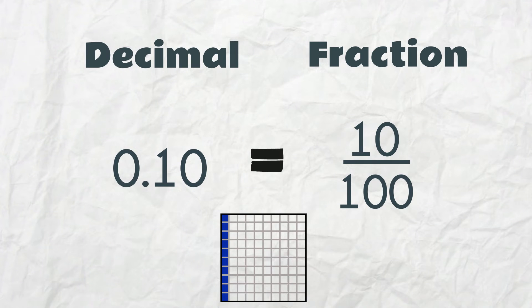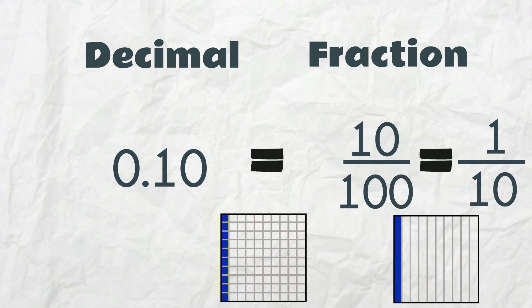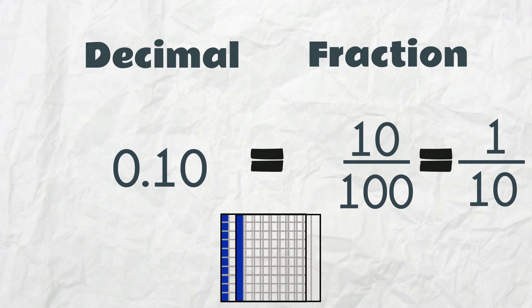Now that we're at 10 hundredths, what do you notice about the decimal form? We have moved into the tenths place. 10 hundredths is the same as 1 tenth. We can also see that from this model, as 1 tenth is overlaid on the 10 hundredths.